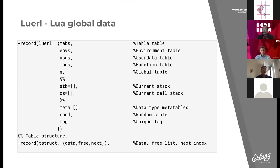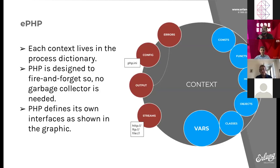The state includes: a top-level global table G that refers to all other tables, the stack and call stack, data types, and a random state for generating unique tags. Every time you change something in a table, you find that table, update it, put the updated version back into the structure, and pass it around. This is slower than standard Lua, and much of that overhead comes from managing data in this way.